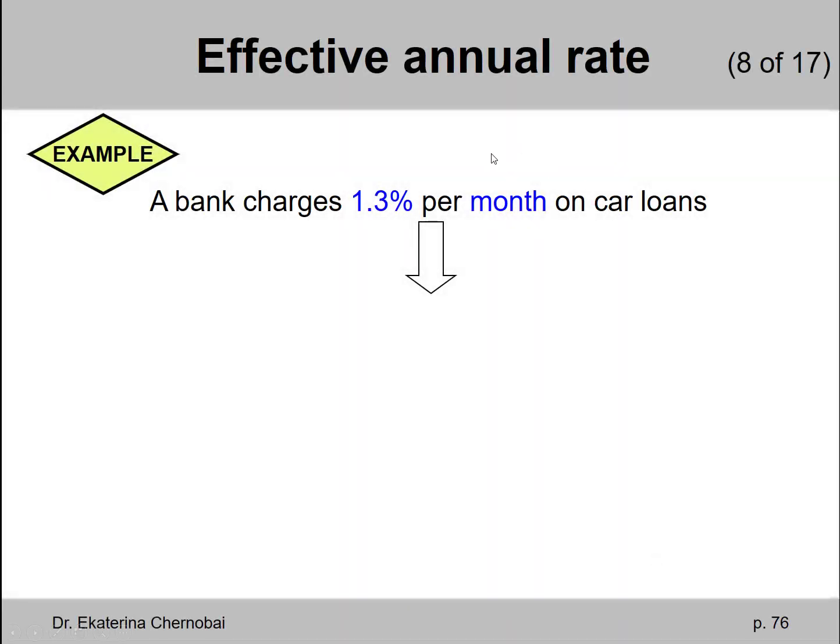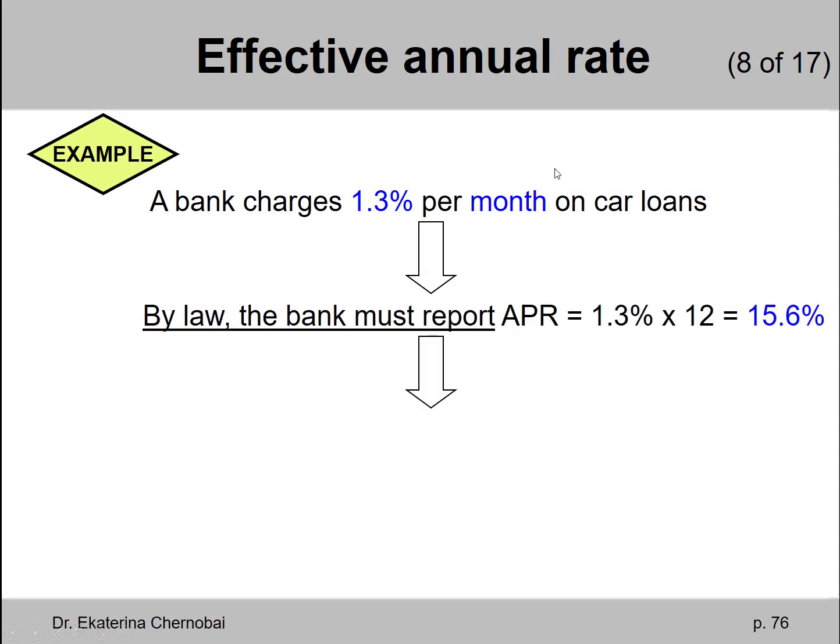Example, a bank charges 1.3% per month on car loans. What does it mean? What is this bank going to report to customers by law? It's going to report the annual interest rate or the APR, annual percentage rate of 15.6%, which is 12 times 1.3% per month.